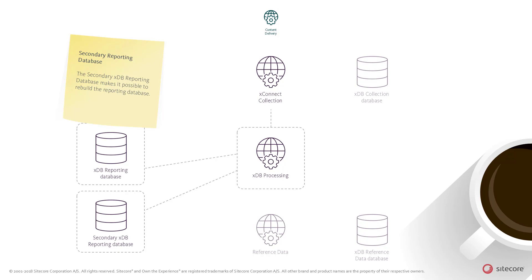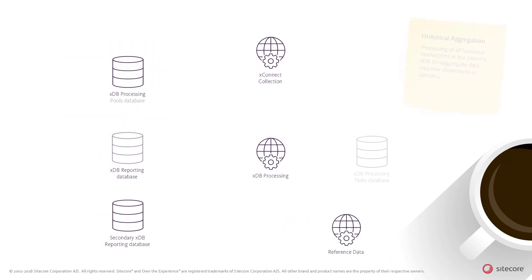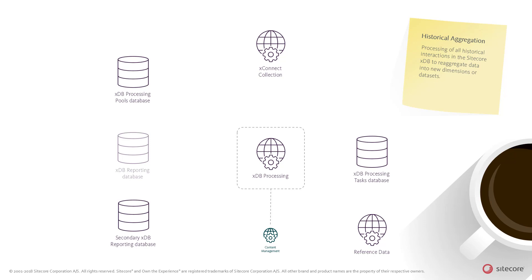Please note that it is not recommended to add a secondary reporting database unless you plan to run a historical aggregation, as it will require the system to write to both the primary and secondary reporting databases and therefore increases the overall load on the system. A historical aggregation process can be started by an administrator through the Sitecore admin interface. The content management role will in turn trigger the processing operation on the XDB processing role. This will initially clean all the data in the secondary reporting database and create a historical aggregation task in the XDB processing tasks database.